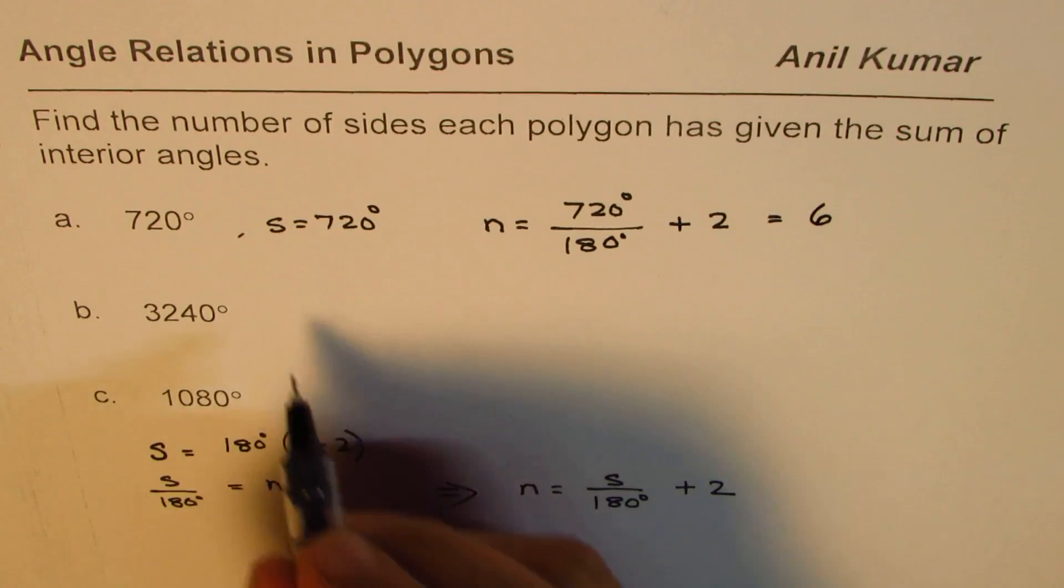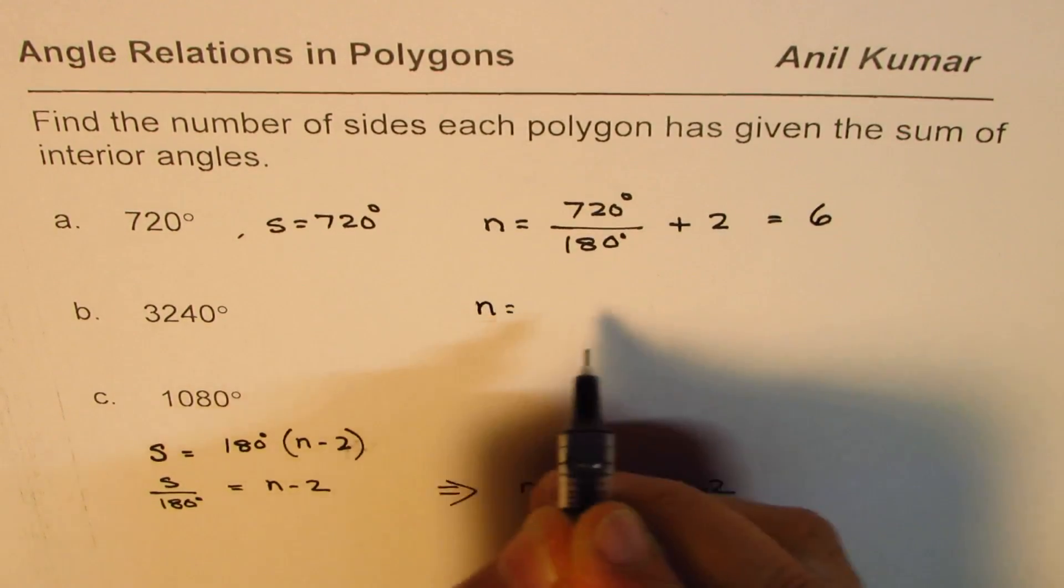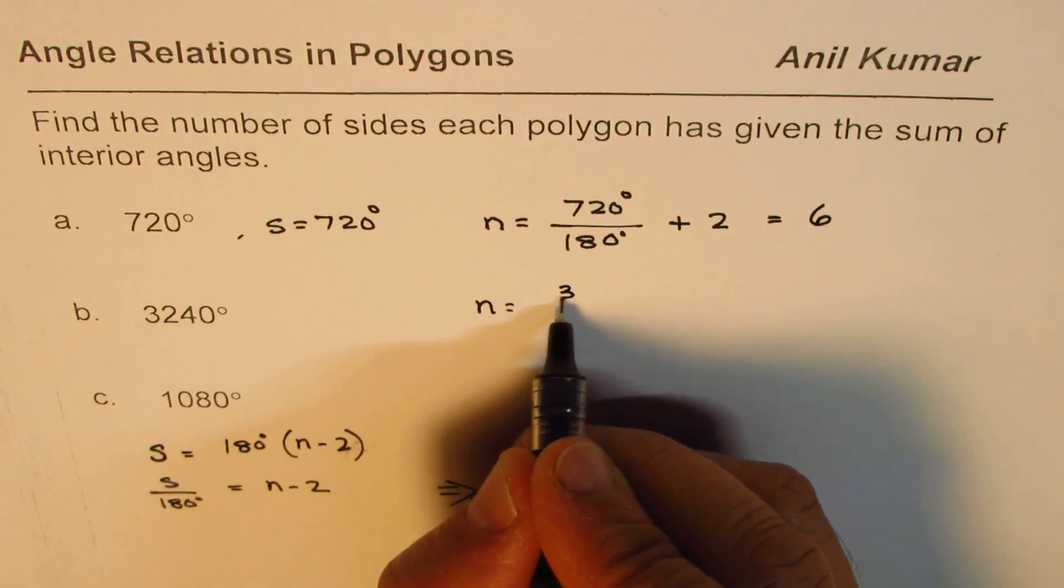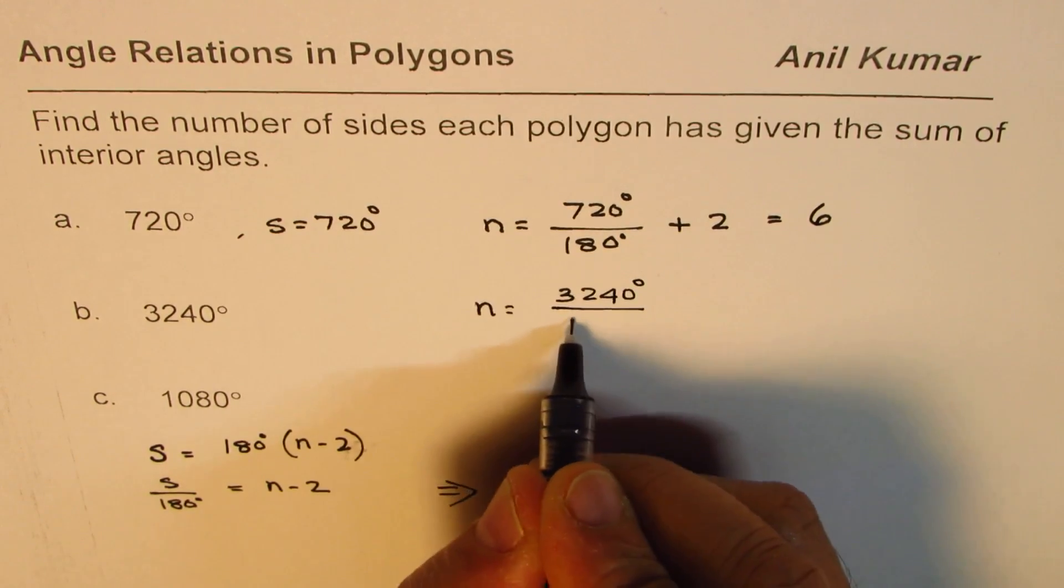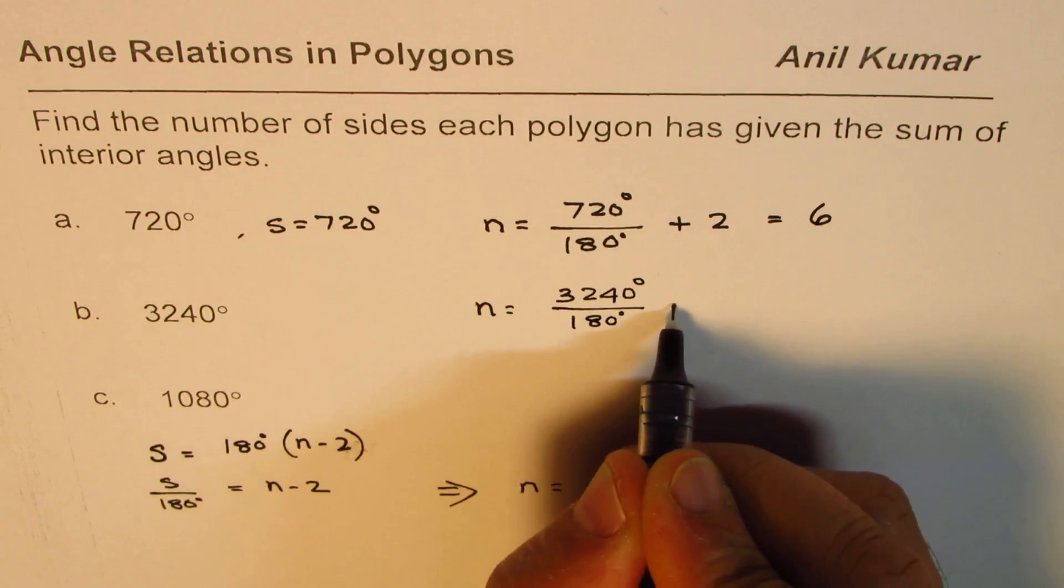Likewise, we can do the next one where n equals 3240 degrees divided by 180 degrees plus 2. We can calculate this.